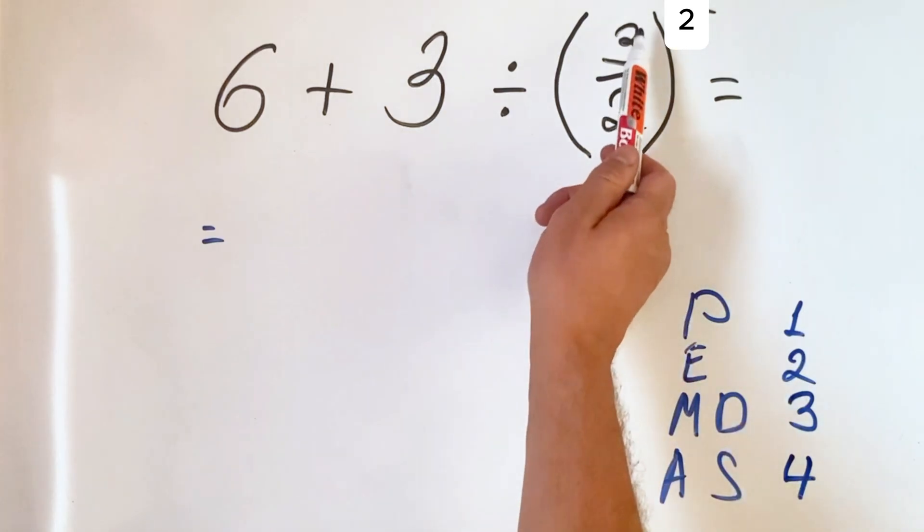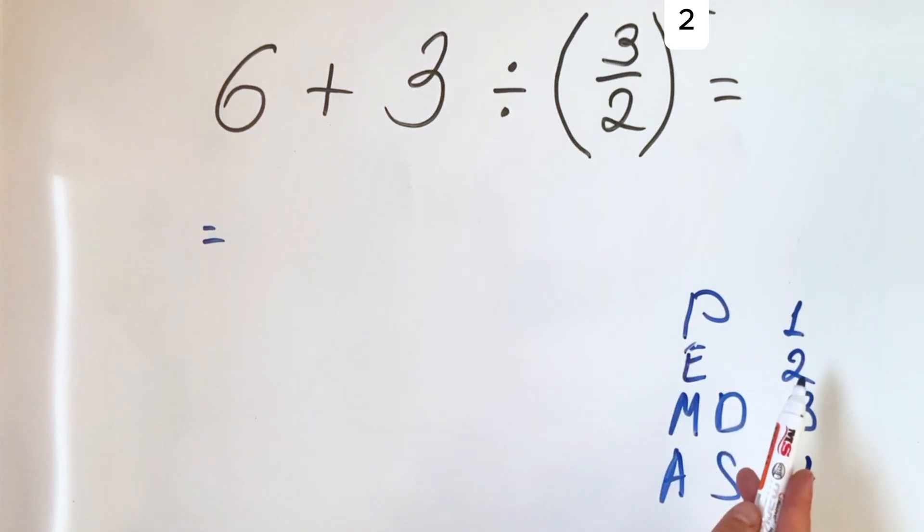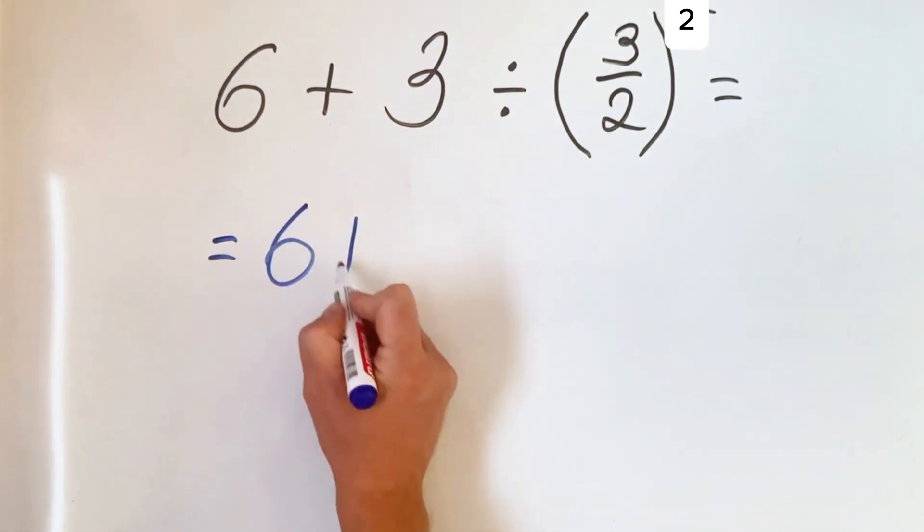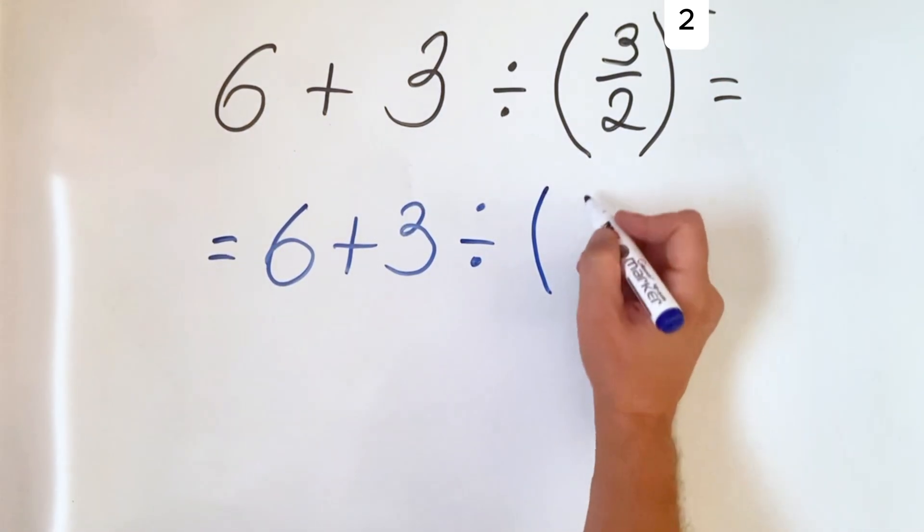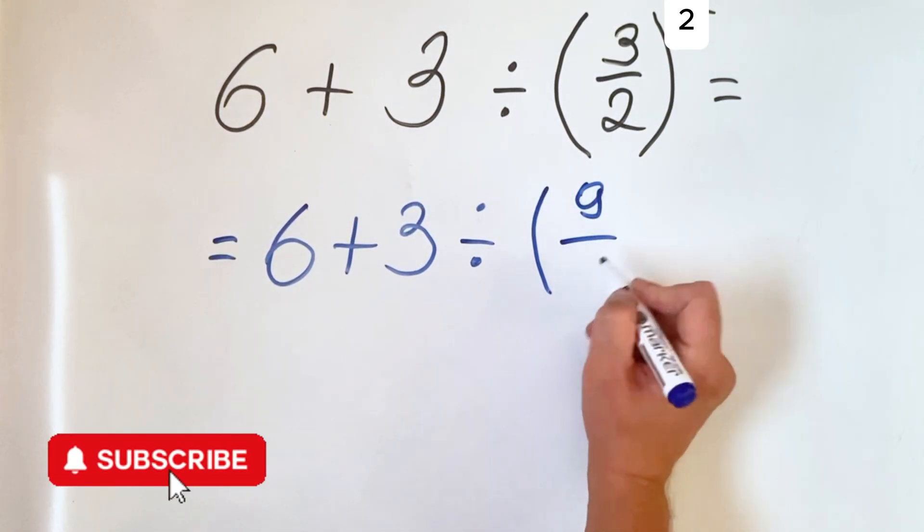We have 3 over 2 all squared, so we do the exponent first. 3 over 2 squared is 9 over 4.